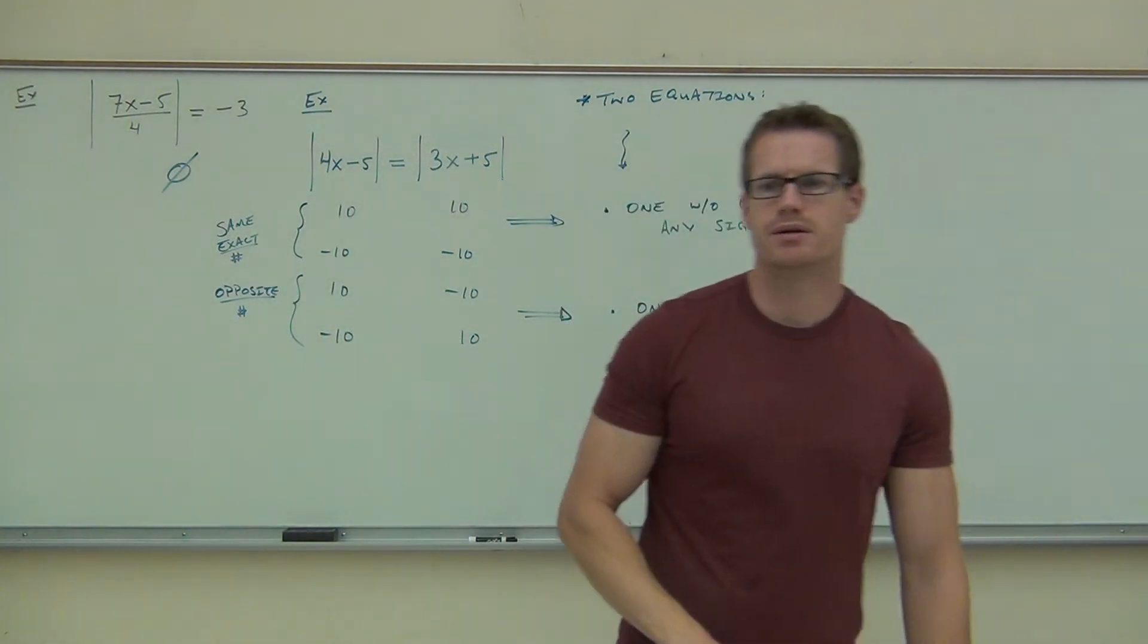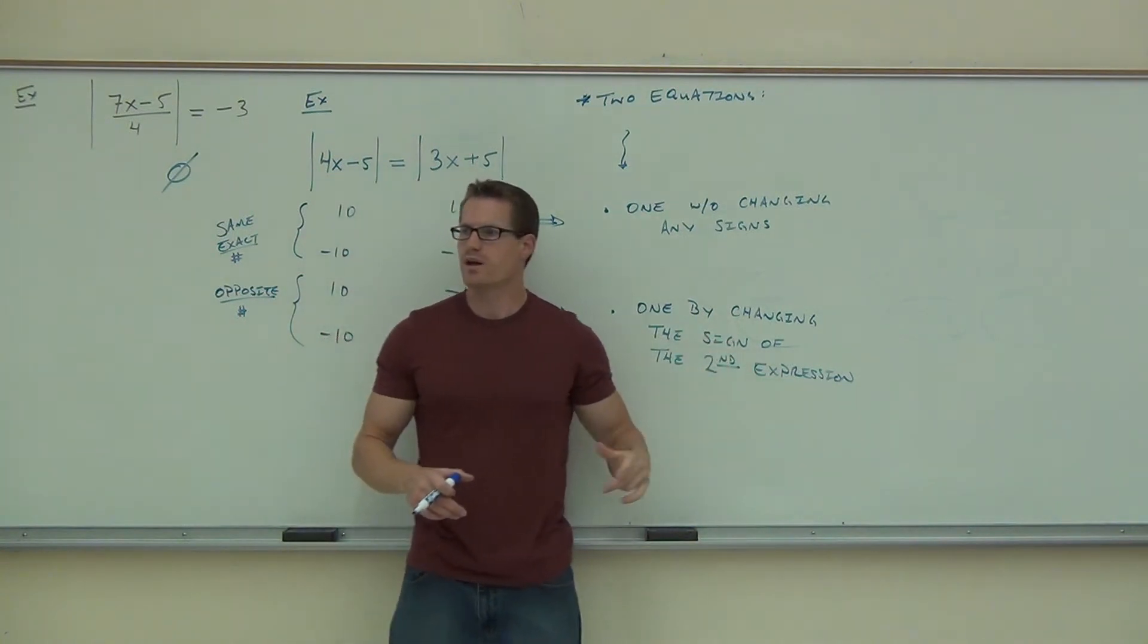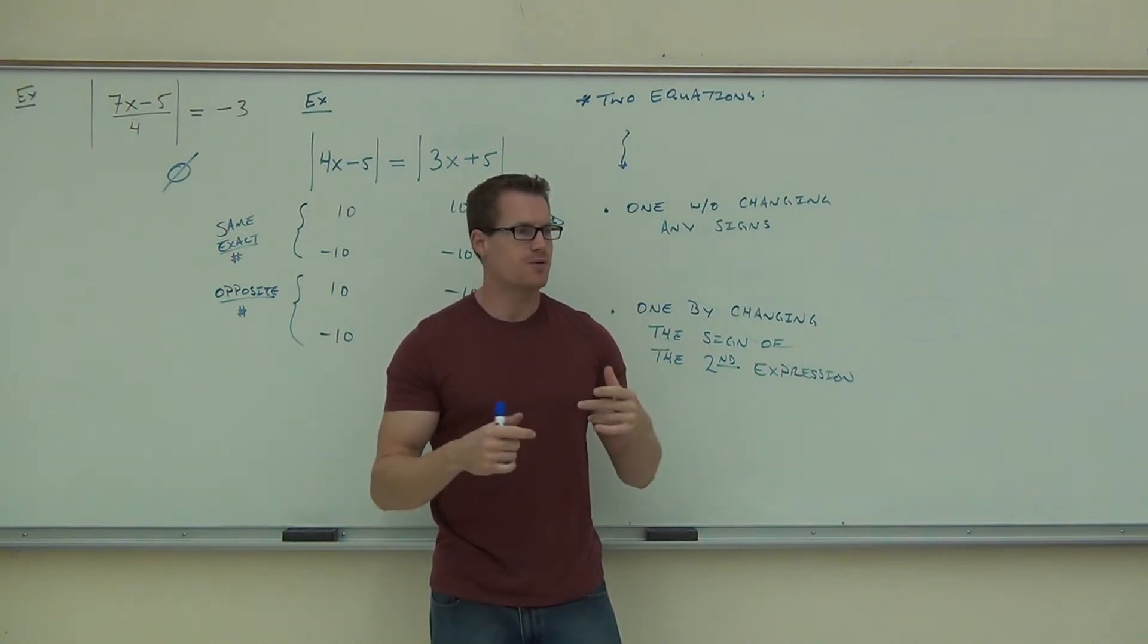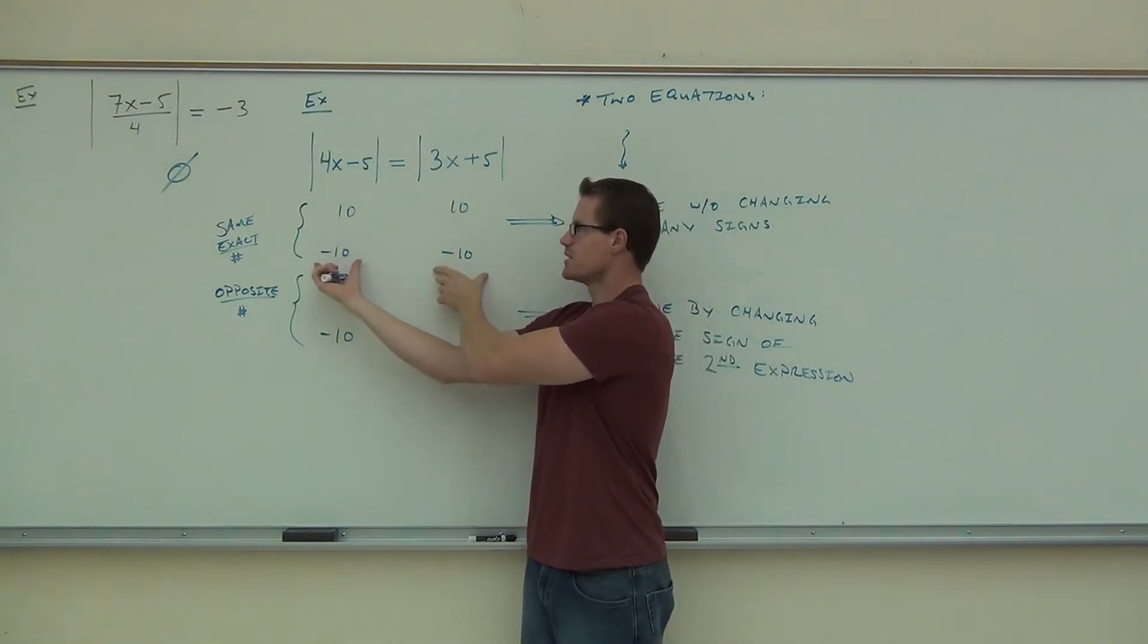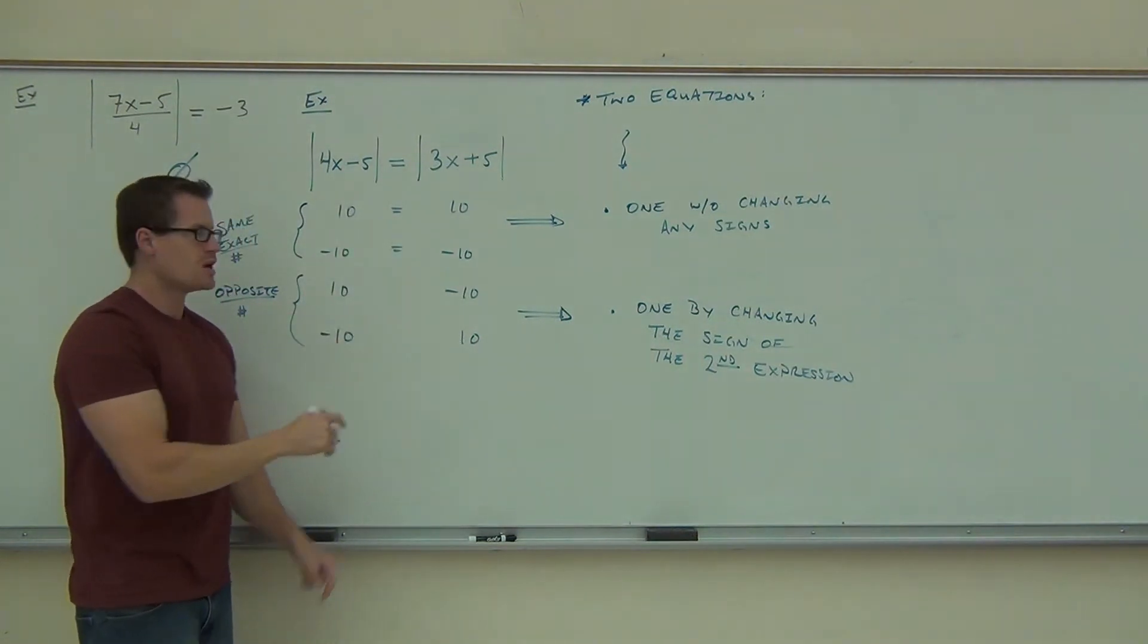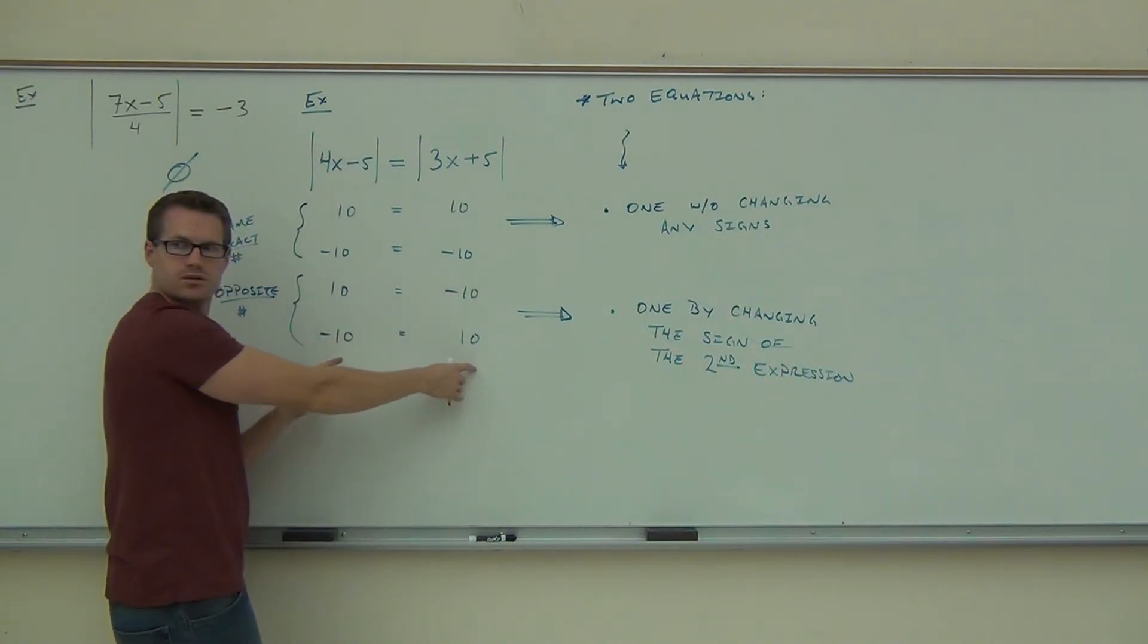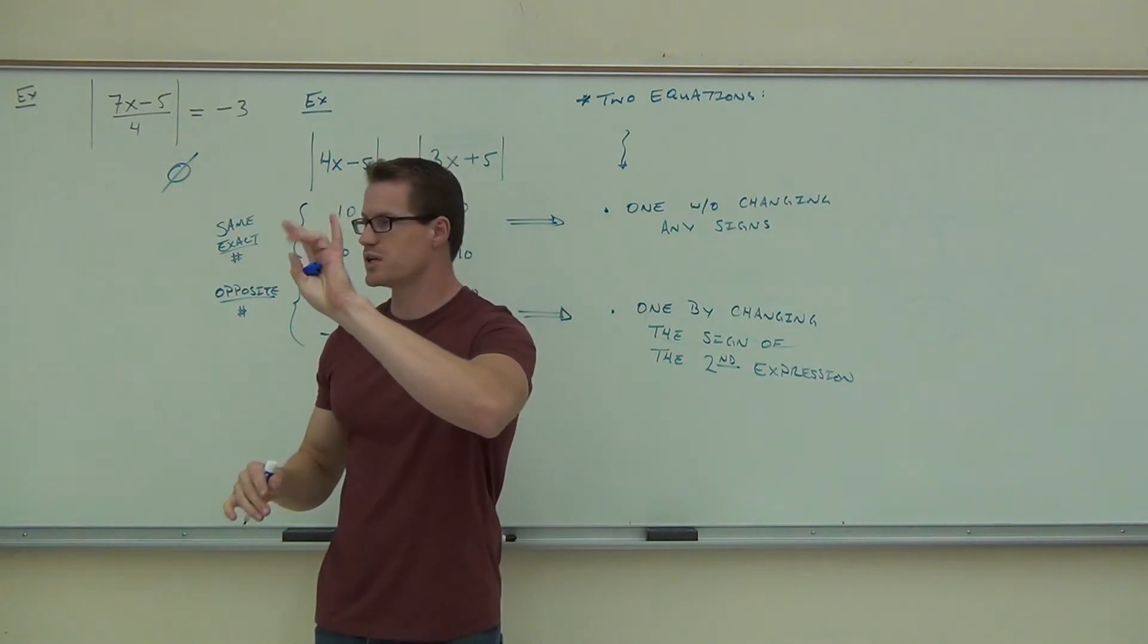Now I always have some students ask me, well, Mr. Leonard, if we make them both the same, one without changing the signs, and we do one by changing the sign of the second expression, why don't we have to also change the sign of just the first expression, and why don't we have to have the negative and the negative? Well, I'll tell you. If we had one without changing the sign, and then we change the sign of both of them, I need you to know that this and this are equivalent. If I make these equal, do you see that this and this are the same exact same? They say the same thing. If I divide both sides by negative one, don't I get that back again? So I don't need both, I just need one. Also, the same thing here. If these are equal and these are equal, do you see that these are the same thing? If I divide both these by negative one, I get that again. They're the same idea. So we don't need four equations, we just need two.